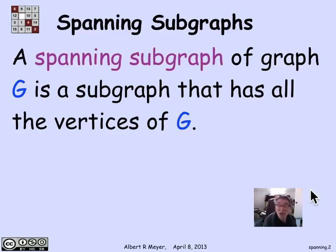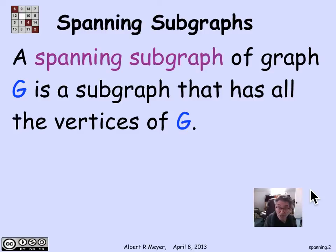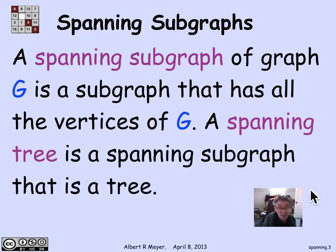A spanning subgraph of a graph G is simply a subgraph that has all the vertices of G. A subgraph of a graph has a subset of the vertices and a subset of the edges. A spanning subgraph has all of the vertices but a subset of the edges. The definition of a spanning tree is a spanning subgraph that is a tree.